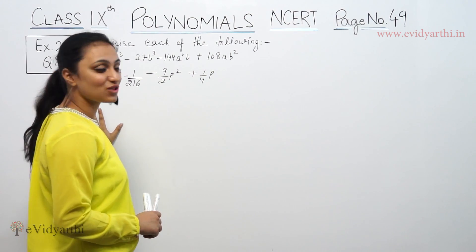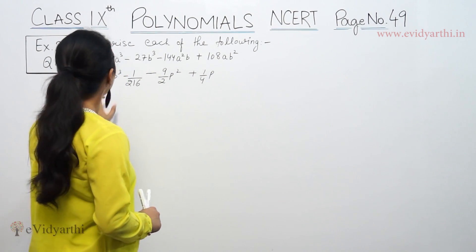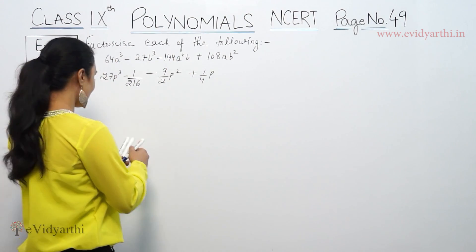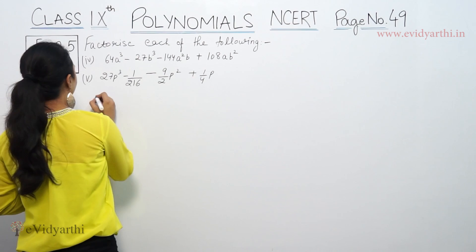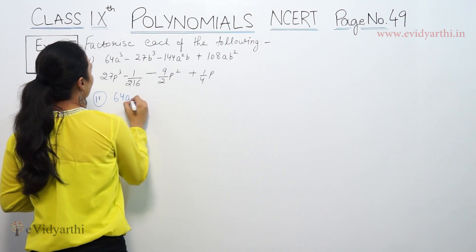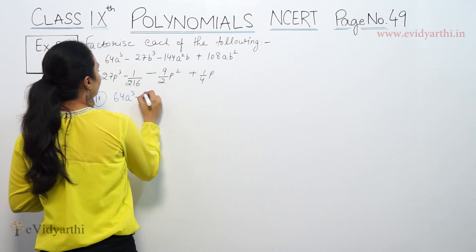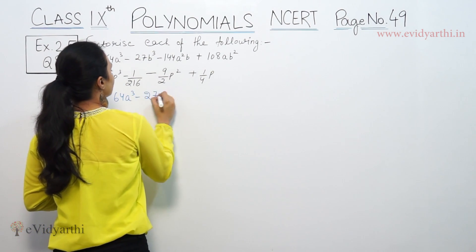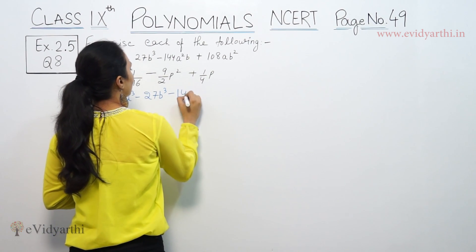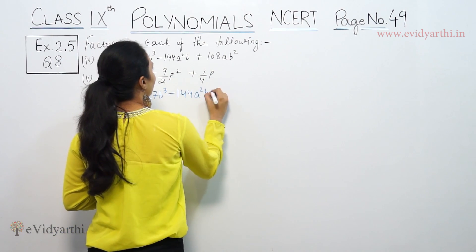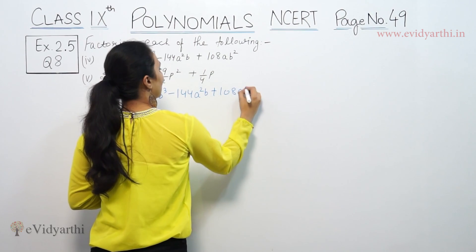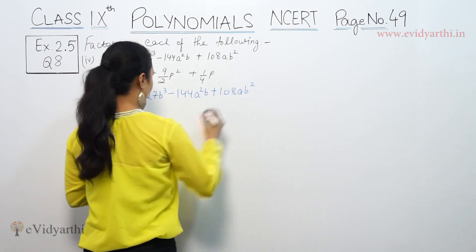We want to find the same factor for each of the following. We want to factorize each of the four parts. We are given 64a³ - 27b³ - 144a²b - 108ab².